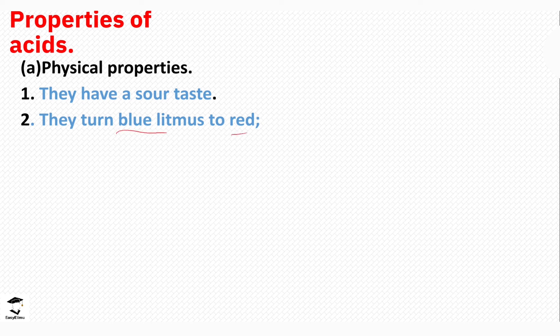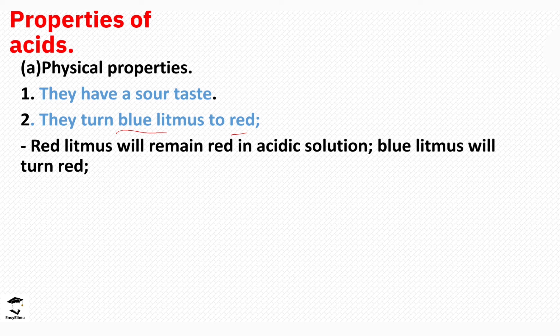Acids turn blue litmus paper to red — this is the indication of their acidic nature. The red litmus paper will always remain red in acidic conditions and the blue litmus paper will turn red. It is important to mention both litmus papers when explaining your answers: red litmus paper remains red, and blue litmus paper turns red.